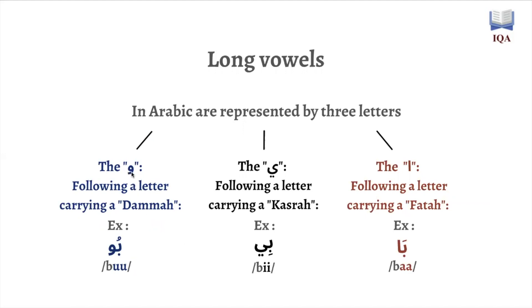The waw following a letter carrying a dhamma is one of the long vowels, and this long vowel always represents the sound u. So anytime you see a waw following a letter that's carrying a dhamma, it creates a long u vowel sound — 'buu.' If you see a ya following a letter carrying a kasara, it creates the long e sound — 'bii.' And if you see an alif following a letter carrying a fatha, it creates a long a vowel — 'baa.'